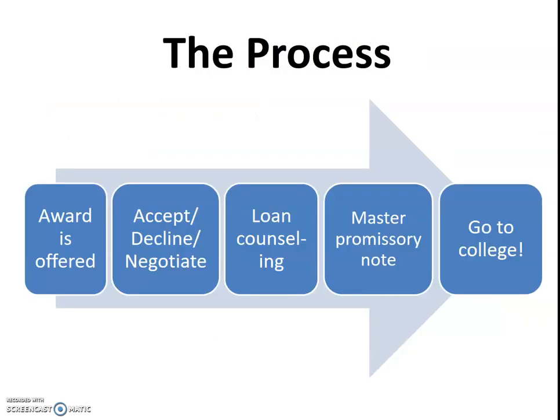Once you've filled out the FAFSA and received your EFC, when the award is offered you and your family can accept part of it, all of it, or none of it — you can also negotiate. You may go through loan counseling and work with the financial aid office at the college you're applying to. Once you decide on the amount, you'll sign a master promissory note and then you're off to college.